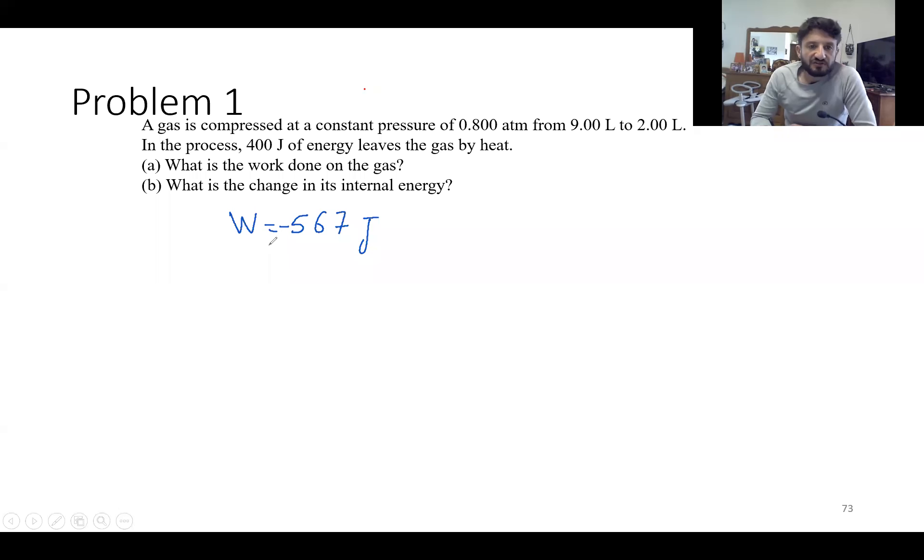So the answer will be omega equals minus 567 joules. Here be careful: in general when we use dU, dQ equals dQ minus d omega. Here the omega used is the work done by the gas.